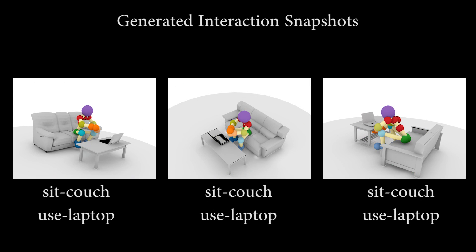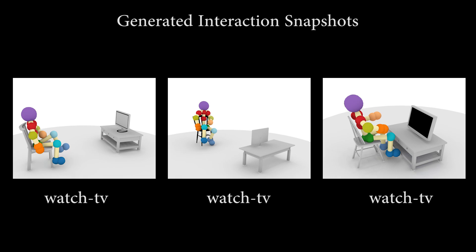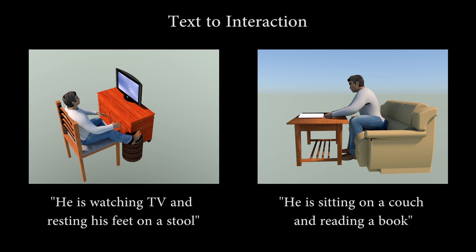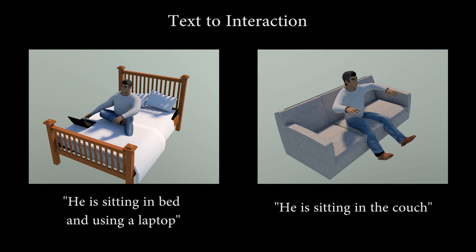Here are some example interaction snapshots for given input actions. By using an NLP pipeline, we create a text-to-interaction system that takes natural language as input and generates fully posed virtual characters.